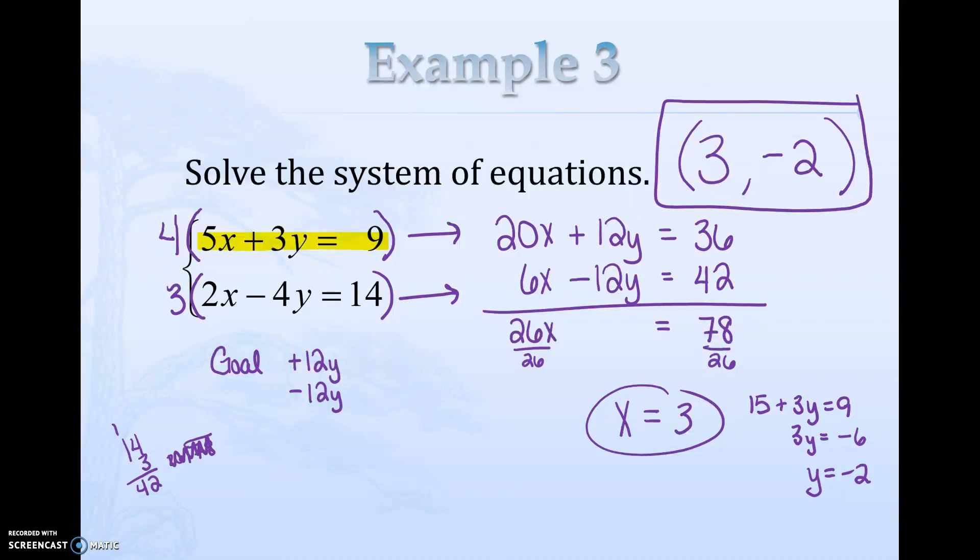If we have something that's already written out, y equals something, then substitution is probably easier and would require less work. If both of them are written in standard form like this, where the x's match up, the y's match up, the numbers match up, then elimination is typically easier.